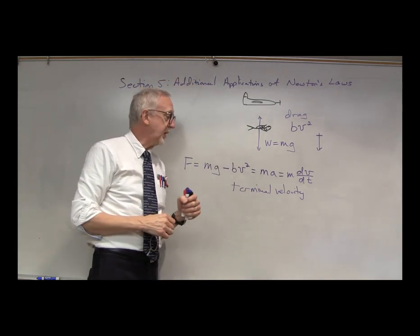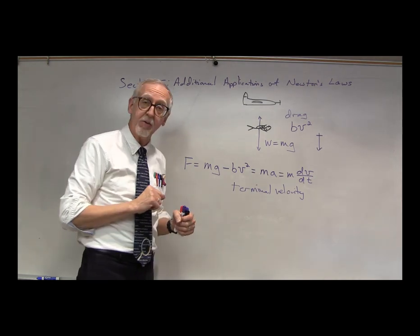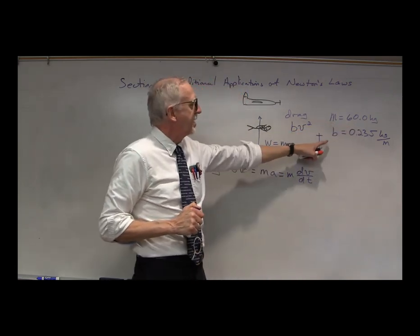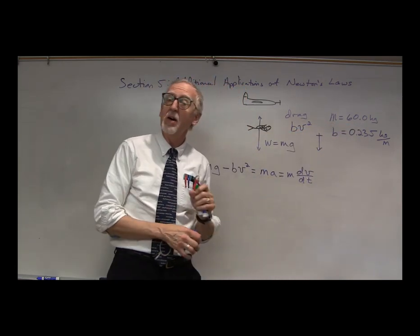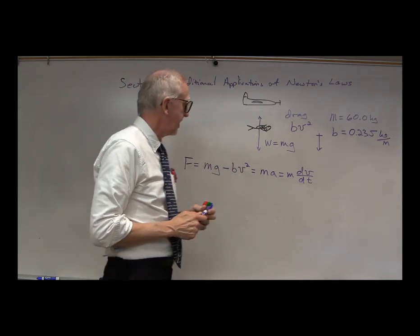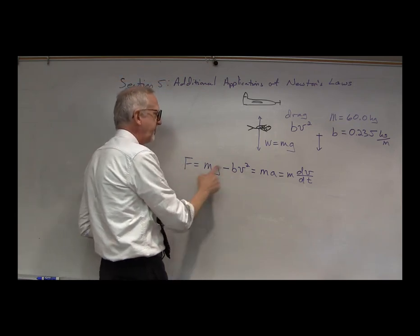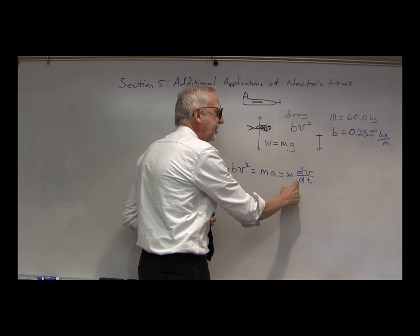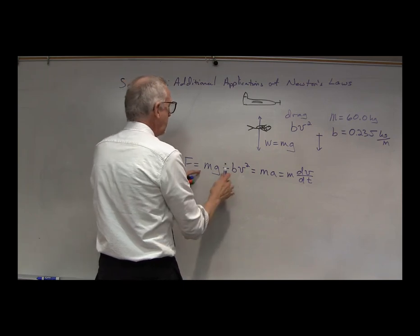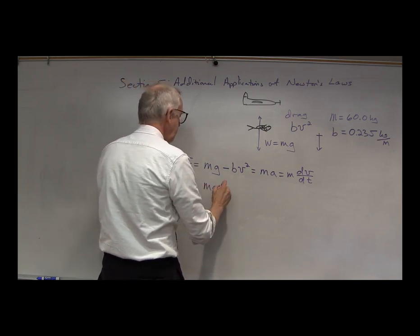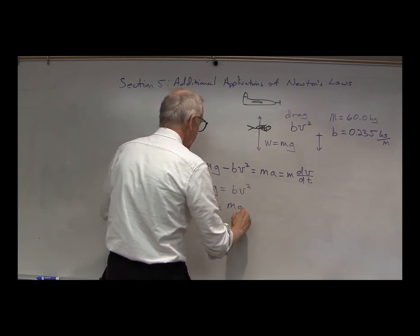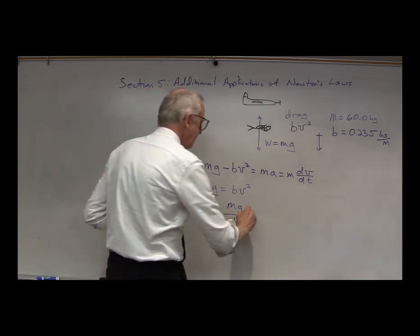What would that value be? Let's put some numbers in and see if we can figure that out. Let's imagine our parachutist has a mass of 60 kilograms and b has a value of 0.235 kilograms per meter. Terminal velocity occurs when the net force acting on her is zero, so dv/dt is zero and there's no acceleration — the velocity is constant. For this to be zero, we must have mg equal to bv squared, or v squared equals mg over b.